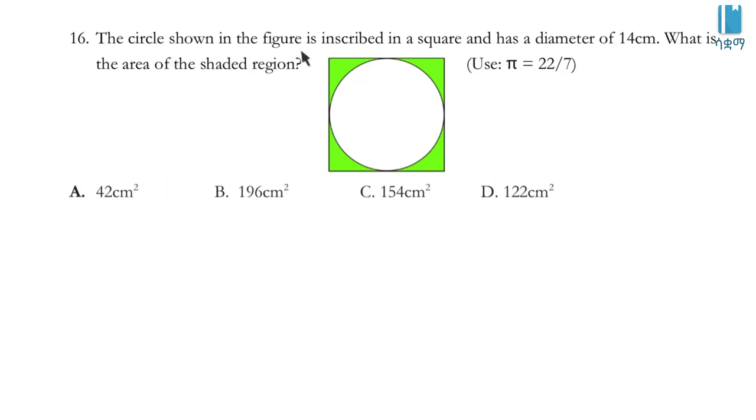The circle shown in the figure is inscribed in a square and has a diameter of 40 centimeters. What is the area of the shaded region? The options are: A. 42 centimeter square, B. 196 centimeter square, C. 154 centimeter square, D. 122 centimeter square.